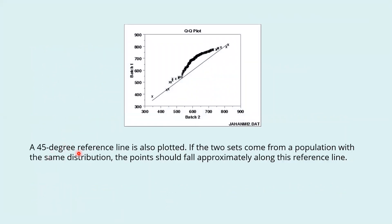A 45-degree reference line is plotted here as you can see on the graph. If the two sets come from a population with the same distribution, the points should fall approximately along this reference line.